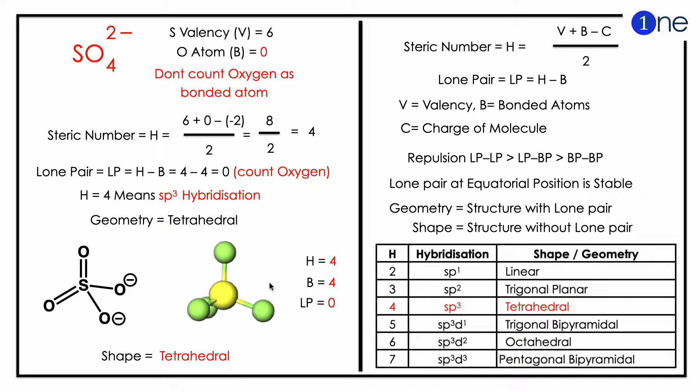So H is 4. Lone pair will be 4 minus 4 equals 0. Here you should count oxygen, so H=4 means sp3 hybridization. sp3 hybridization means geometry is tetrahedral. All the oxygen occupy a corner, sulfur will be the middle atom.